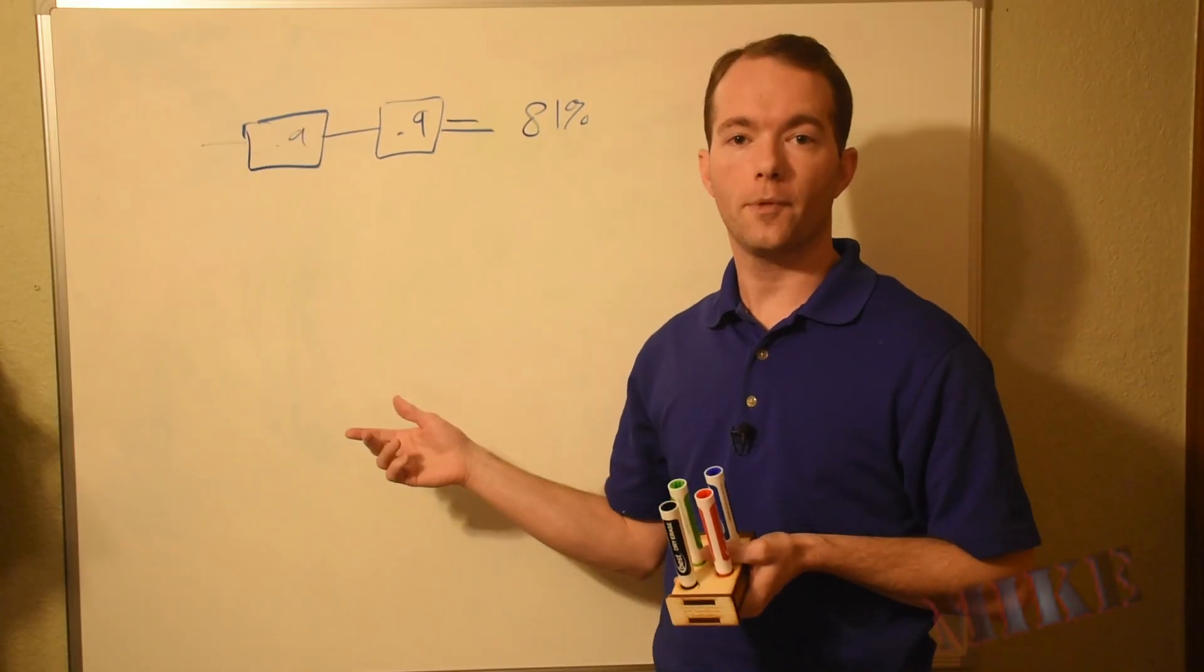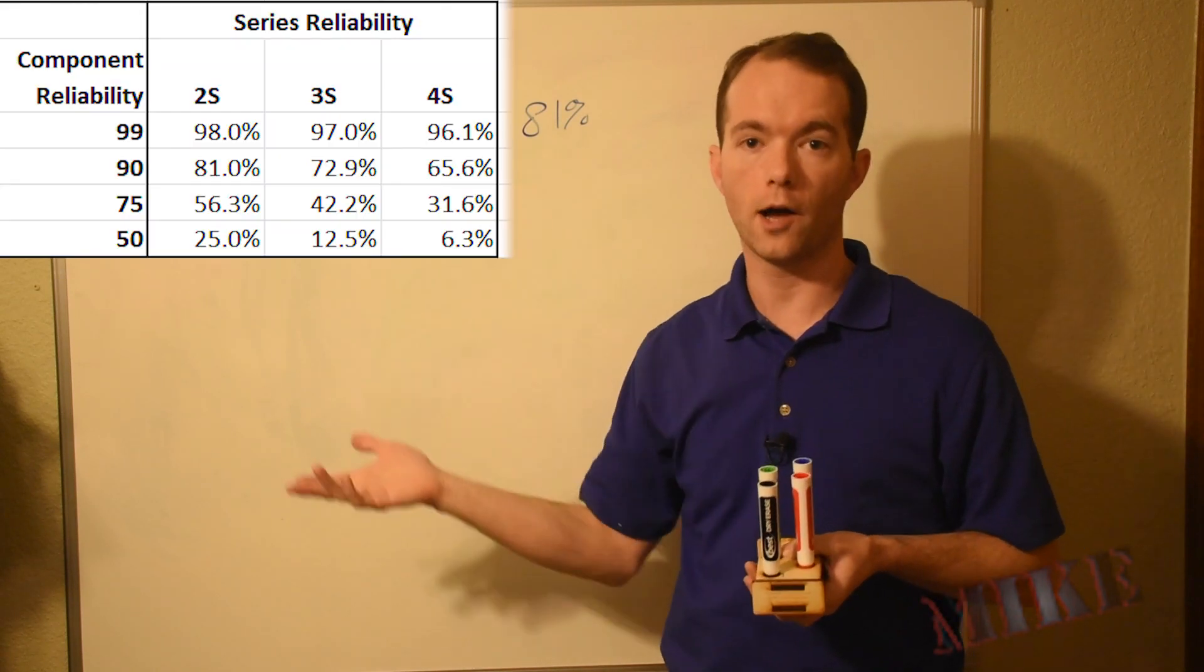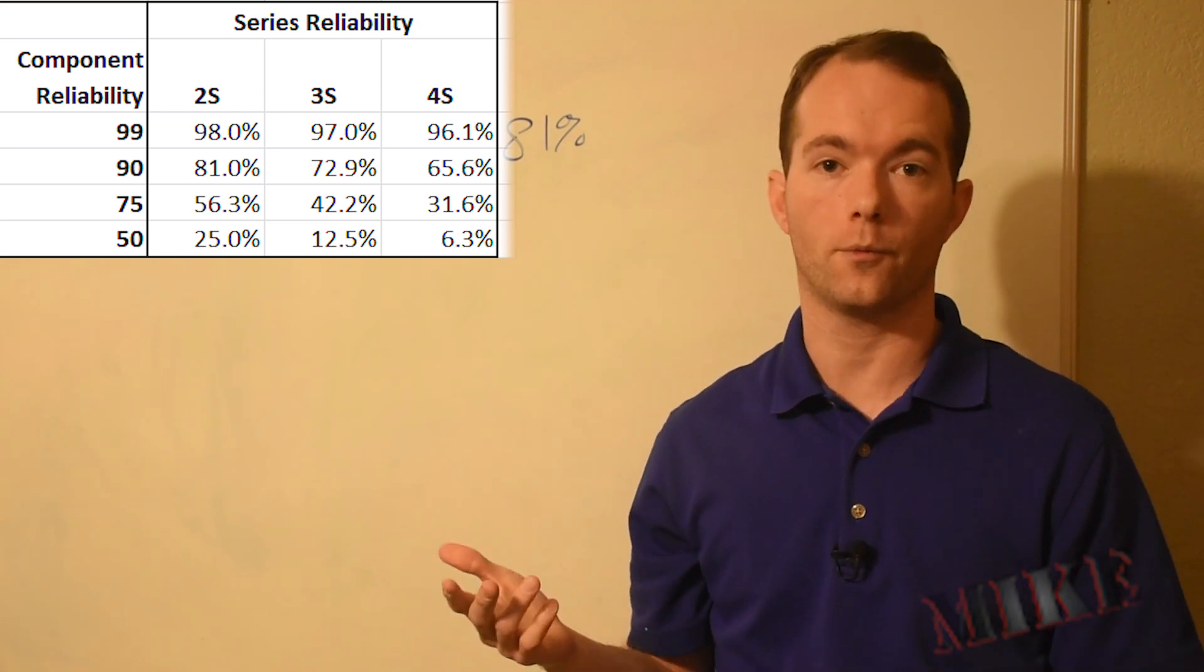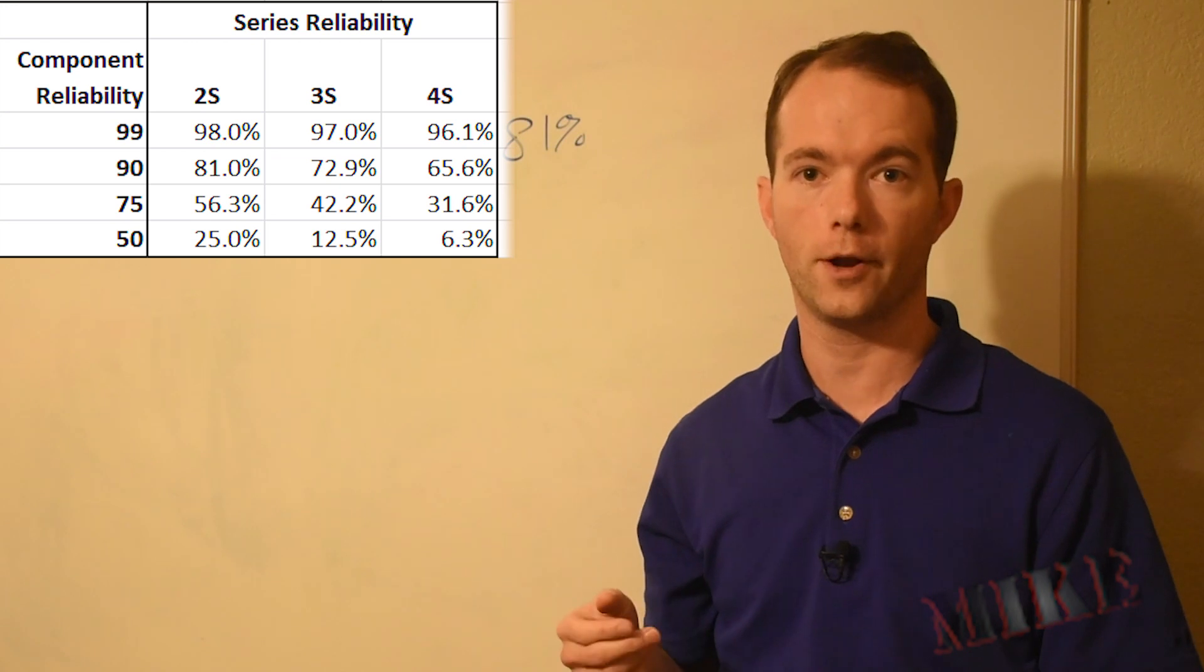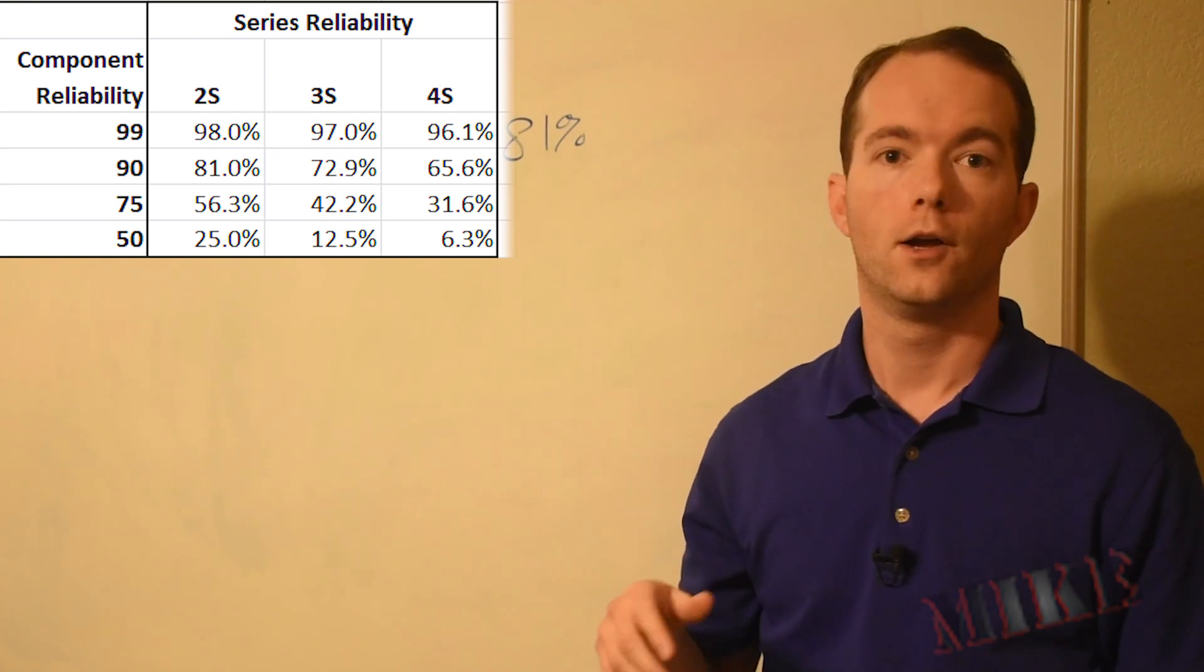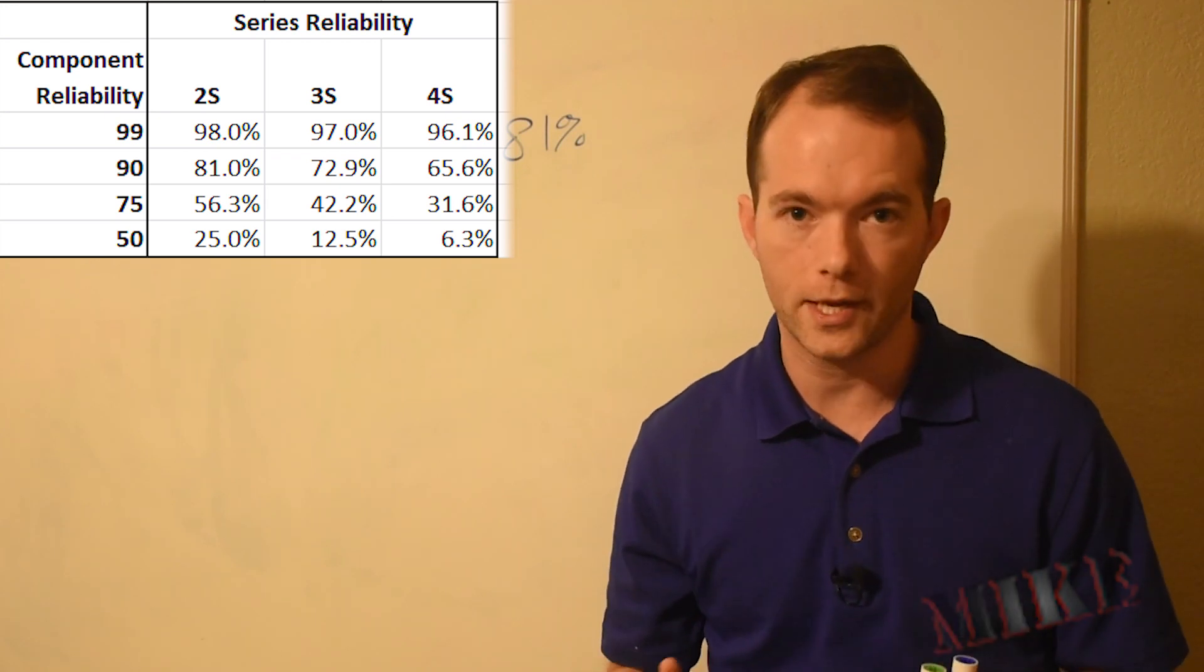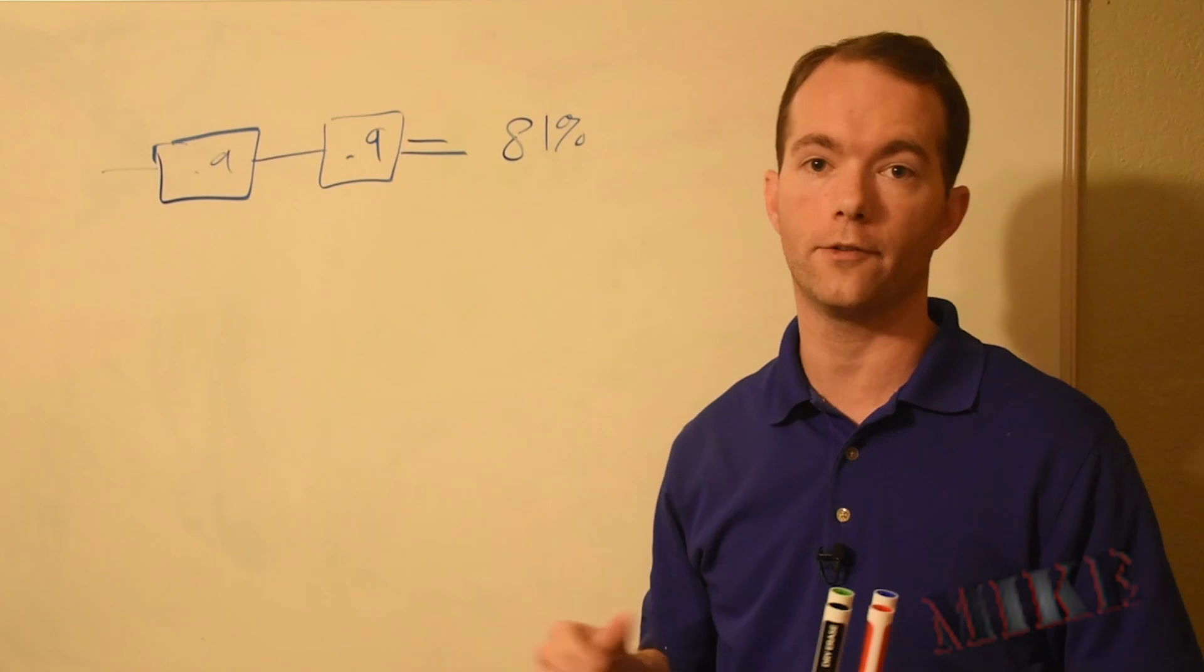So, if we use something that's, say, 99% reliable at each component, then the system reliability doesn't trail off quite as fast. If we use something that's 75% reliable, you can see that it's 56% for two or 42% for three. So, to improve the reliability of a series system, we need to improve the reliability of each of its components. Remember that a chain is only as strong as its weakest link.